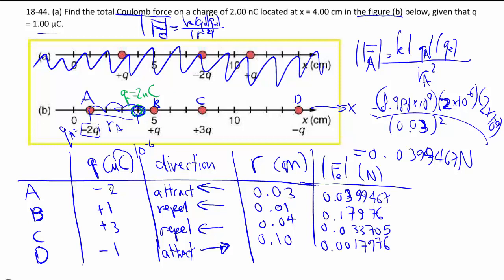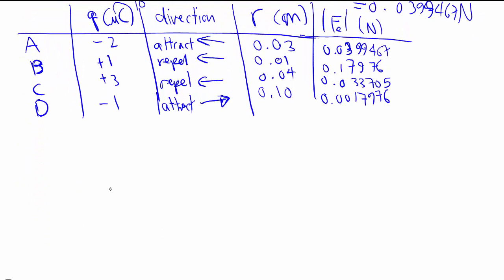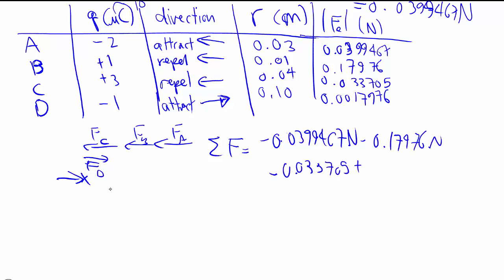Then we add them up, except, be careful here, we have to add them up like vectors. So we have force A going that way, and force B going that way, and force C going that way, and force D coming back to this side. So when we add up the forces, we have to keep in mind the direction of the forces. Since it's defined, positive x is to the right, so we have minus 0.0399467, etc., minus, minus again, and then finally we have a plus of force D.